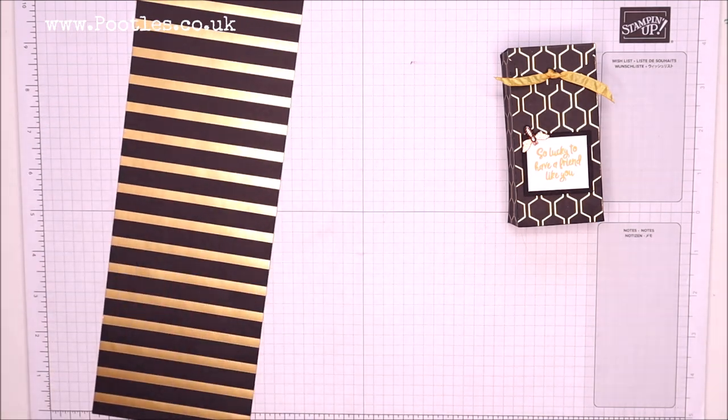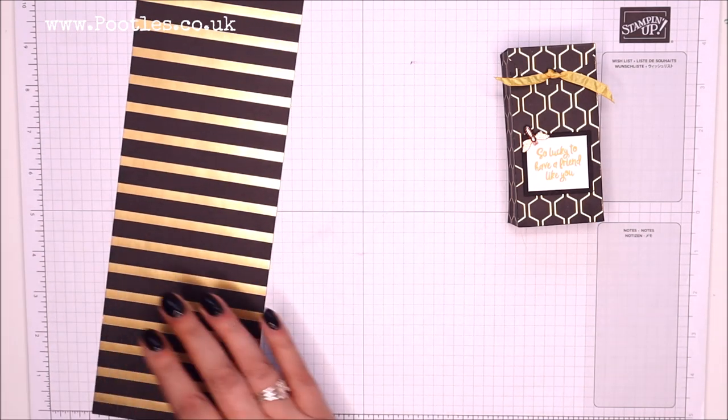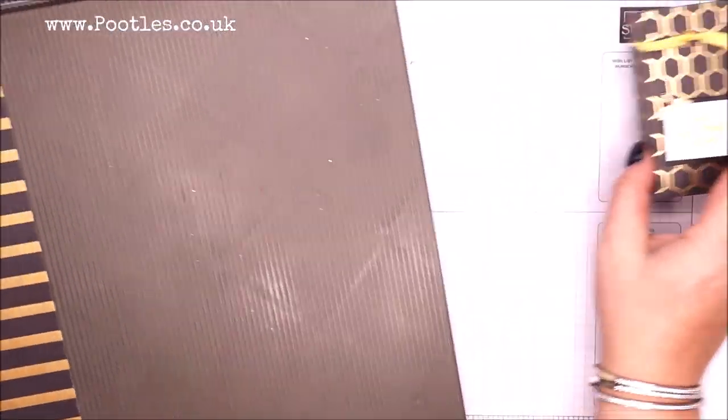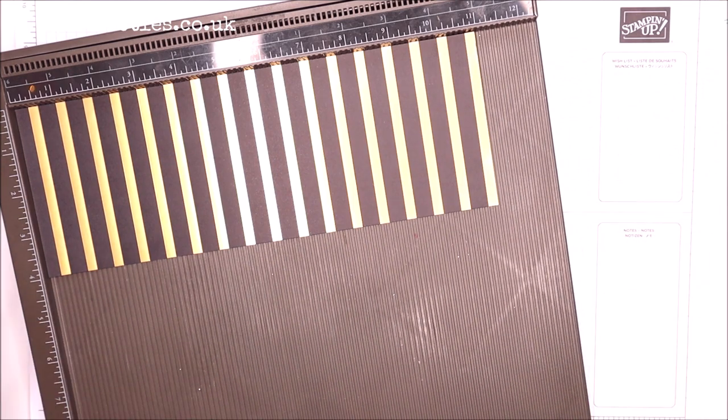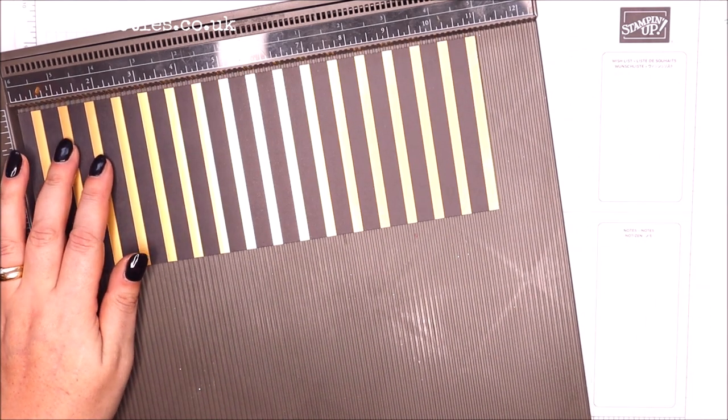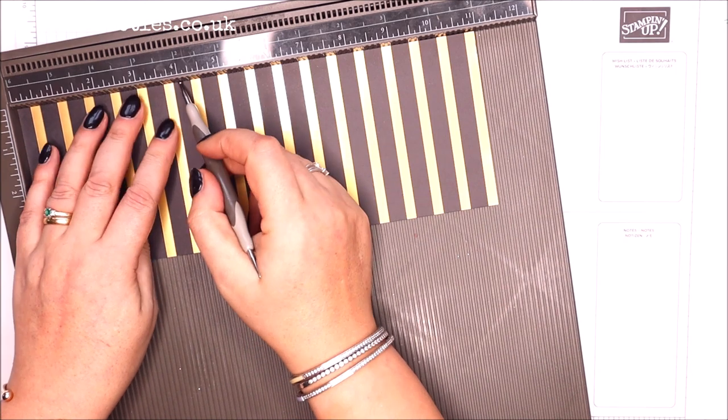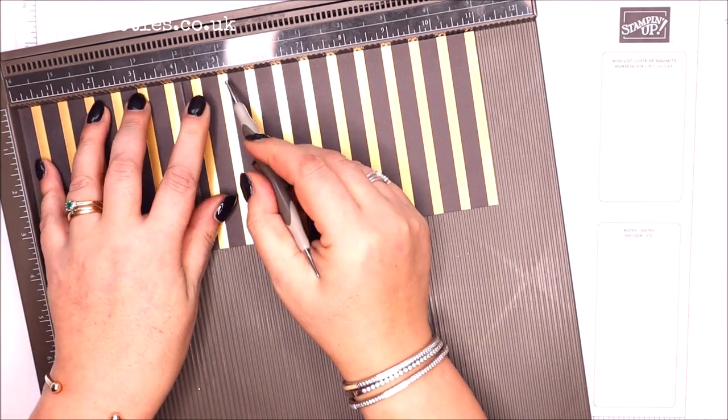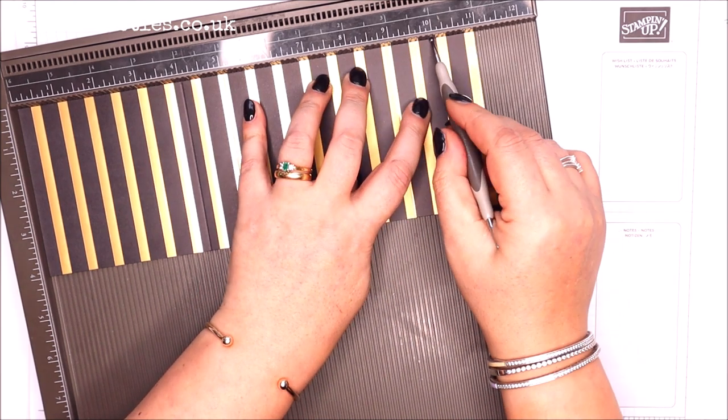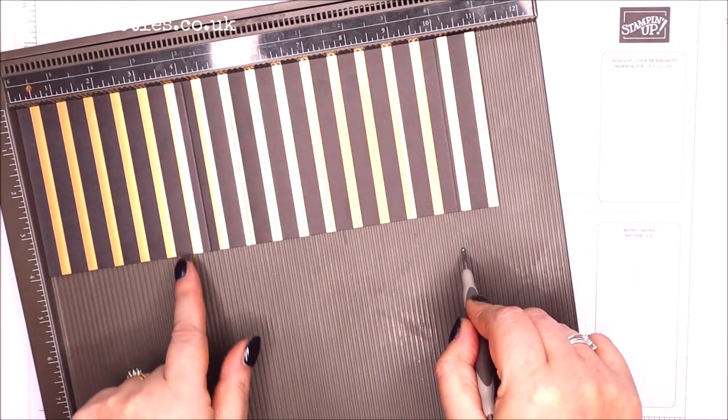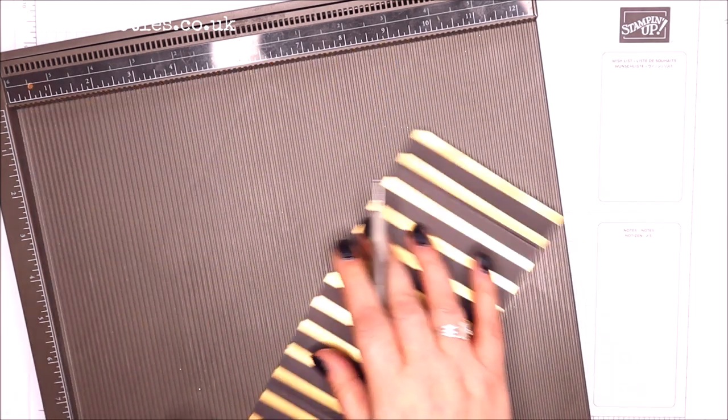So four inches by eleven inches, ten by twenty-seven centimeters. On the long side score it at four, five, nine and ten inches, which in metric is ten, twelve and a half, twenty-two and a half, and twenty-five.